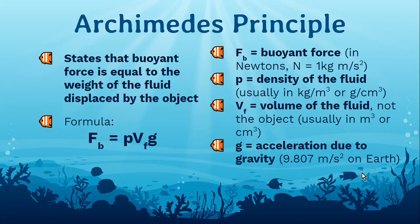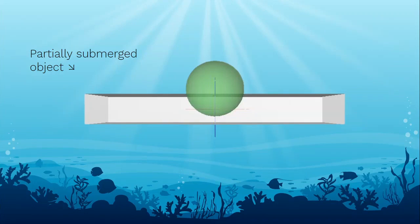F of b is equal to p multiplied by V of f multiplied by g. Or, buoyant force is equal to the density of the fluid times the volume of the fluid displaced times the acceleration due to gravity. One thing to stress is to keep in mind that the buoyant force is equal to the weight of the fluid displaced, not the object's weight or volume, because an object does not need to be fully submerged in a fluid for buoyant force to be applied. It can be partially submerged as well.